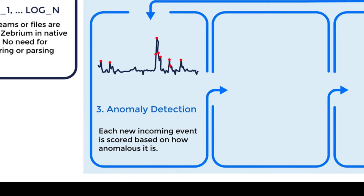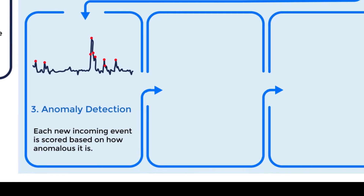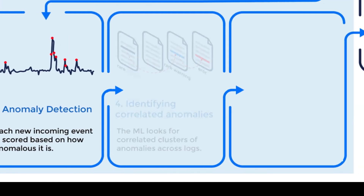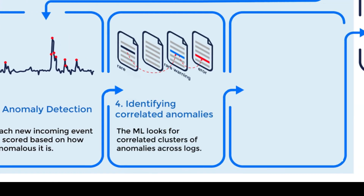Even though this type of anomaly scoring is very accurate, the results can still be very noisy, simply because the logs themselves are very noisy. So the next layer of machine learning takes care of that — it looks for clusters of correlated anomalies across the logs. This is what allows it to find the core events that make up a root cause report. In real-life production, we are seeing greater than 90% accuracy in being able to pick out the right log events that explain the root cause.